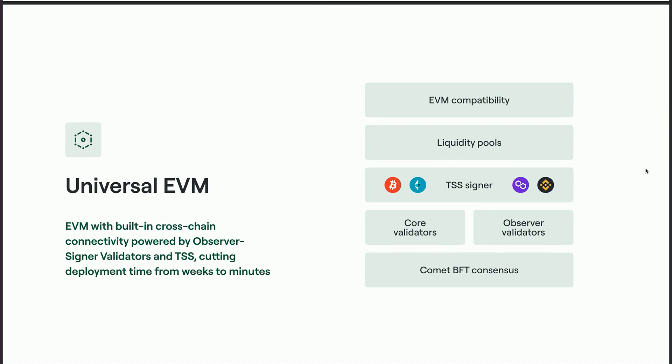We have our Comet BFT consensus as our consensus layer and core validators validating ZetaChain transactions. What makes us very interesting is our observer validators and our TSS signers. Our TSS signers allow us to deploy a single custody address on any non-EVM and EVM chain. Observer validators are a subset of our validators that run validators of every single connected chain, always reading incoming deposits and transactions. The TSS signers hold the custody addresses for all native assets being used on ZetaChain.